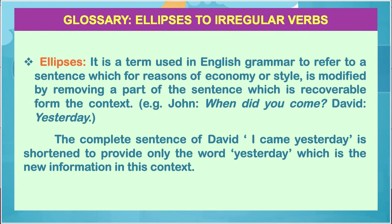Glossary: Ellipses to Irregular Verbs. Ellipsis — it is a term used in English grammar to refer to a sentence which, for reasons of economy or style, is modified by removing a part of the sentence which is recoverable from the context. For example: 'John, when did you come?' — 'David, yesterday.' The complete sentence 'David, I came yesterday' is shortened to provide only the word 'yesterday,' which is the new information in this context.